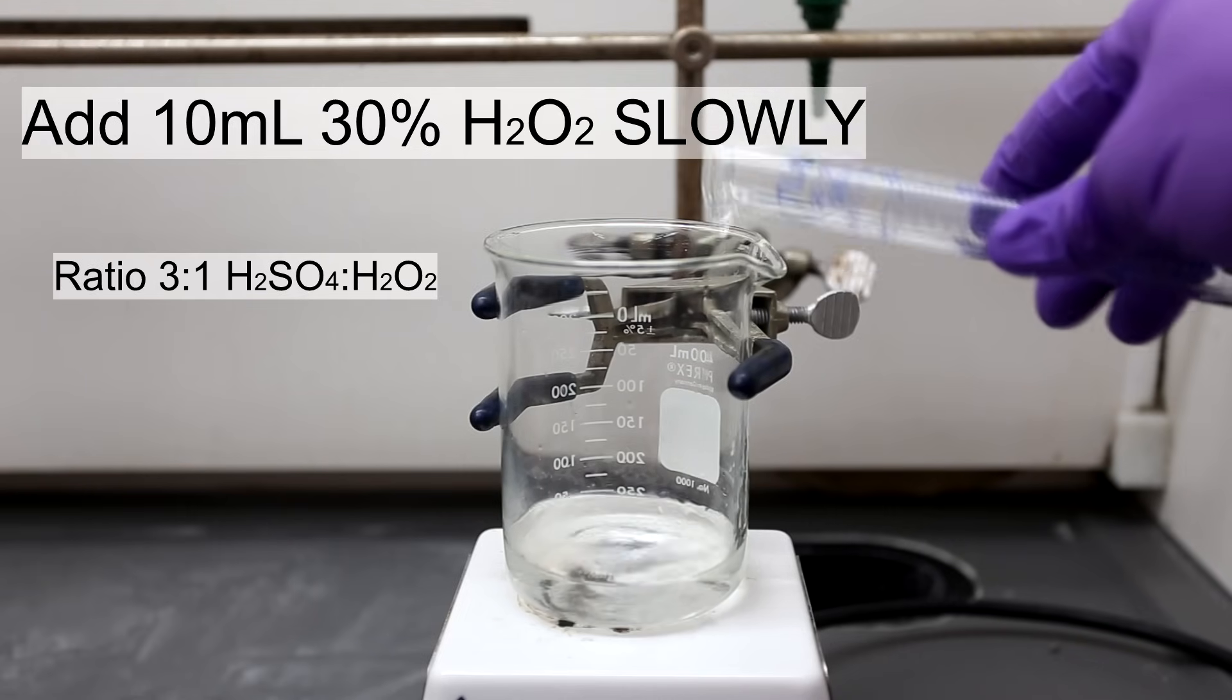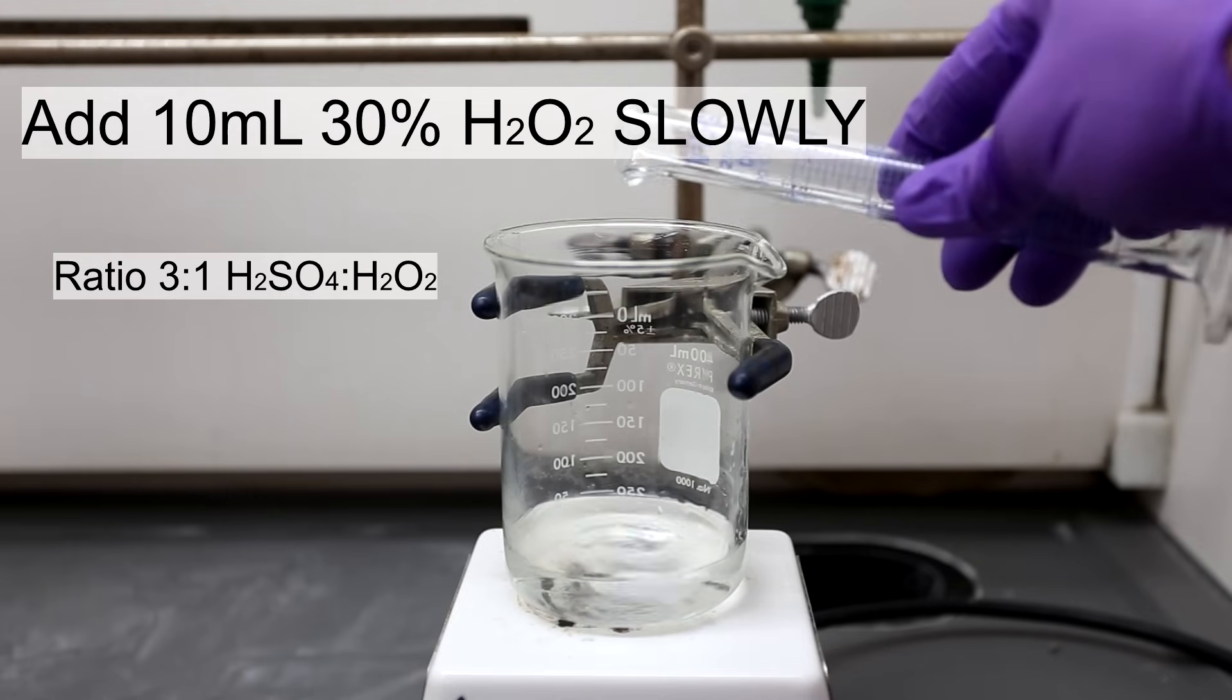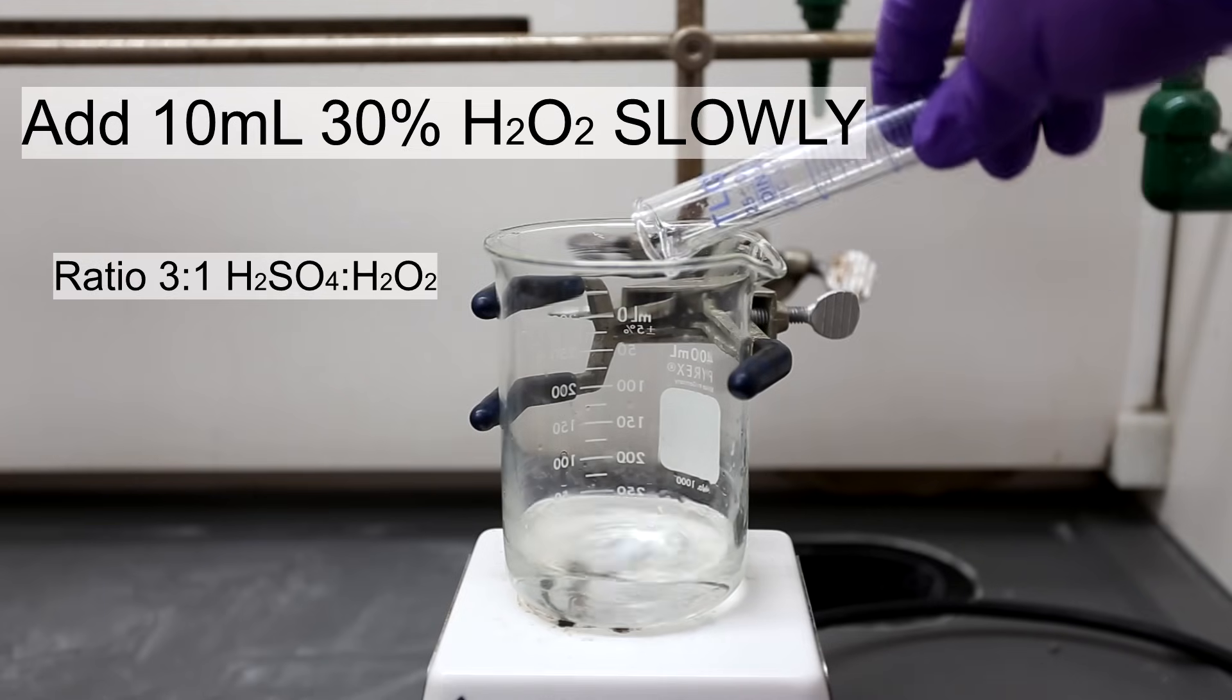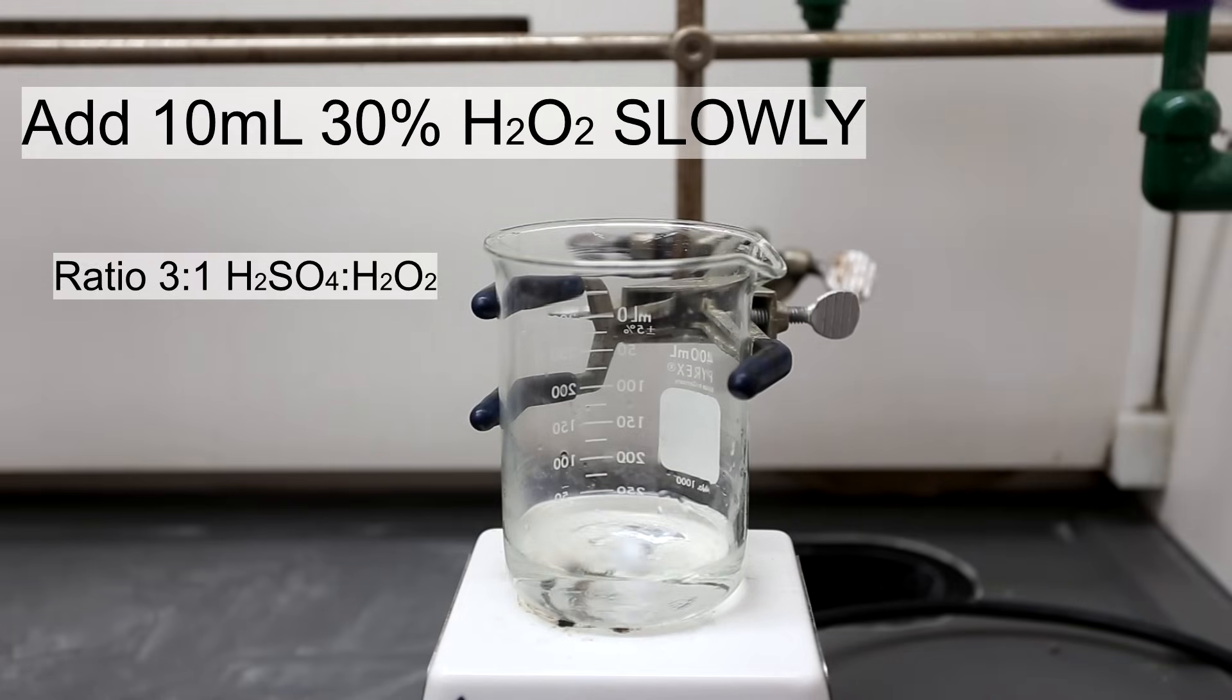It is extremely important that you add the hydrogen peroxide to the sulfuric acid and not the other way around. The mixture can become extremely dangerous or even explosive if the concentration of hydrogen peroxide is too high.